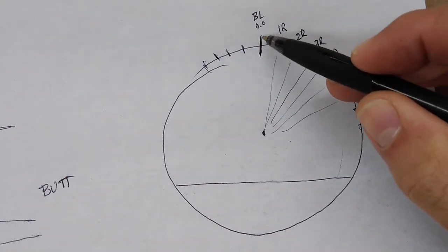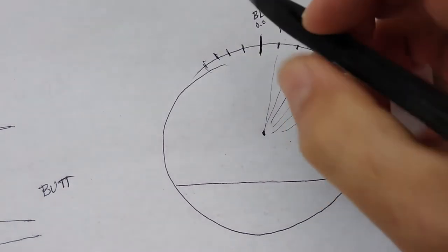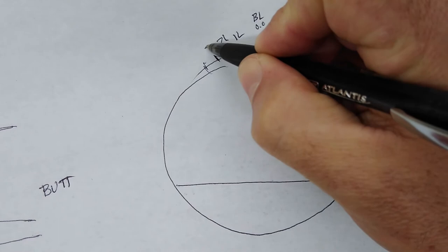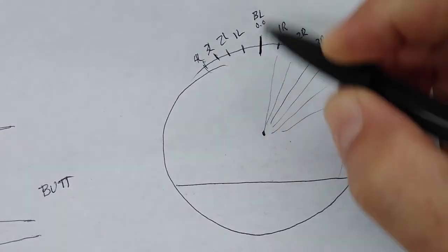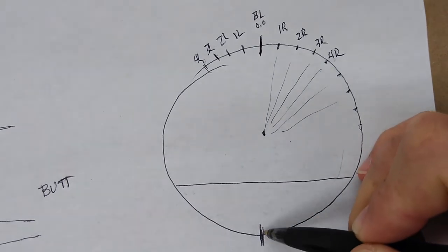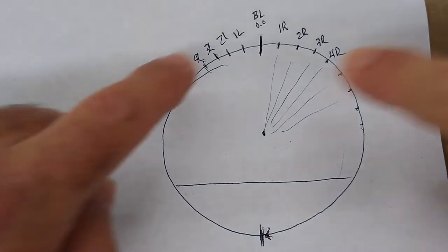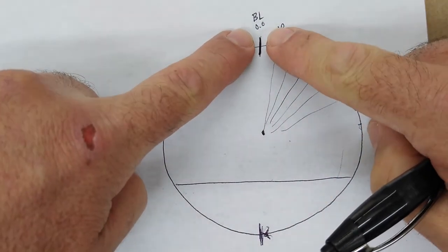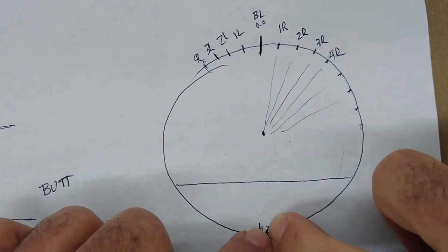Starting from the top at zero, you count one, two, three, four, five, and so on going around. The same thing on the left: stringer one left, two left, three left, four left, going all the way around until you get to the bottom of the aircraft, where you stop counting — because your numbers from left and right would meet up. So you start from zero and count all the way down until you reach the center bottom of the aircraft.